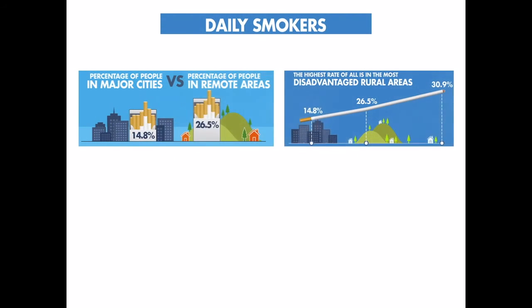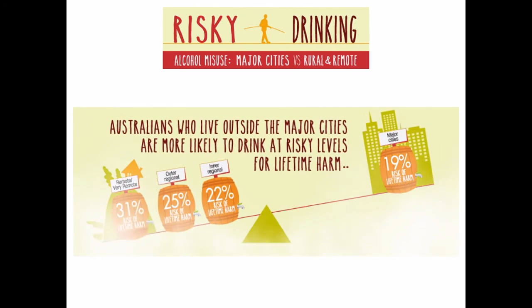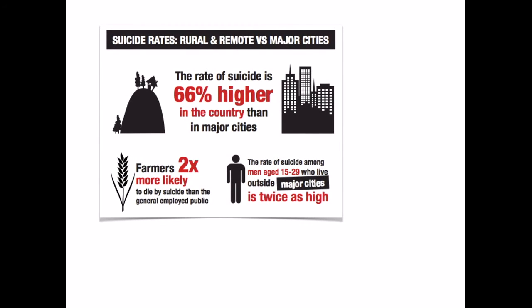The daily smoking comparison between rural and remote areas and major cities is quite significant — up to 26% in rural and remote areas are daily smokers compared with around 15% in major cities. This has major implications for diseases such as cardiovascular disease and cancer. Risky drinking is also an issue, with up to 31% in very remote areas drinking at risky levels compared to 19% in major cities. There is also a much higher suicide rate for those in rural and remote areas.